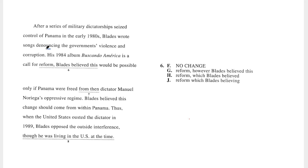I'm going to read this sentence to start — that's usually how I start with English questions. We have: his 1984 album Buscando America is a call for reform. Blades believed this would be possible only if Panama were freed from then-dictator Manuel Noriega's oppressive regime. I can already see that there's an issue with no change — there's no glue holding these two sentences together, and essentially it's a run-on sentence.